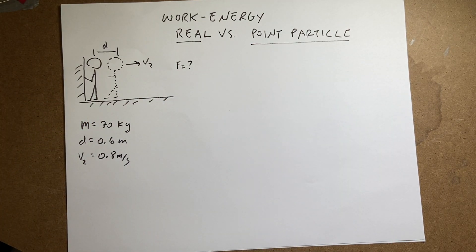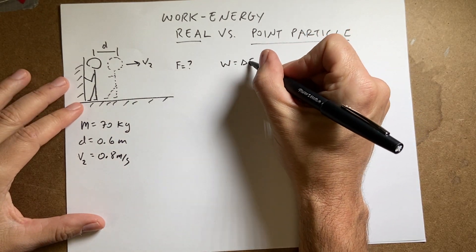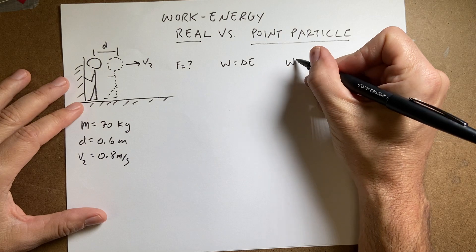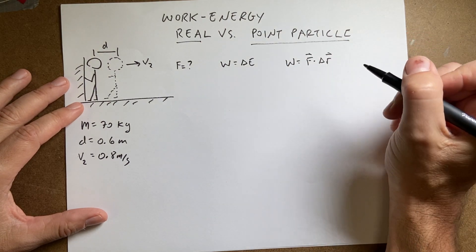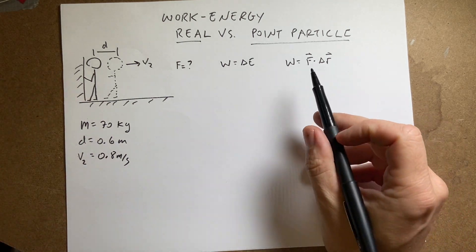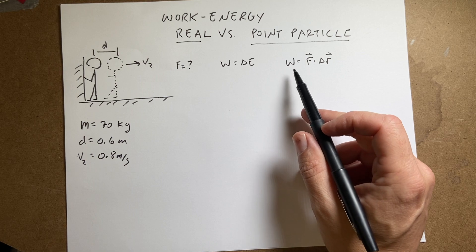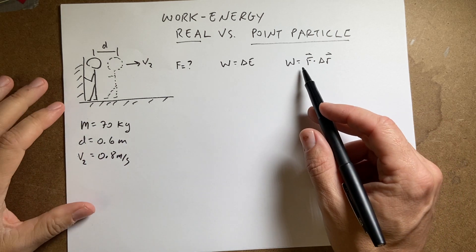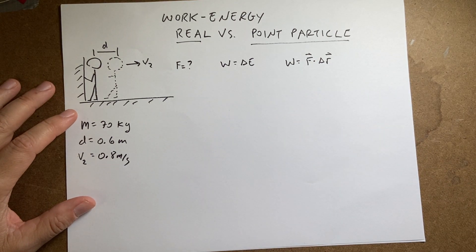Let's start off with the real system. If I use the work energy principle, it says the work is the change in energy. Work is defined as F dot delta R. That's the dot product. The force is a vector, delta R is a displacement vector. Work is work. If the force is not constant, then you have to do an integral. Let's just assume that the force is constant right here.